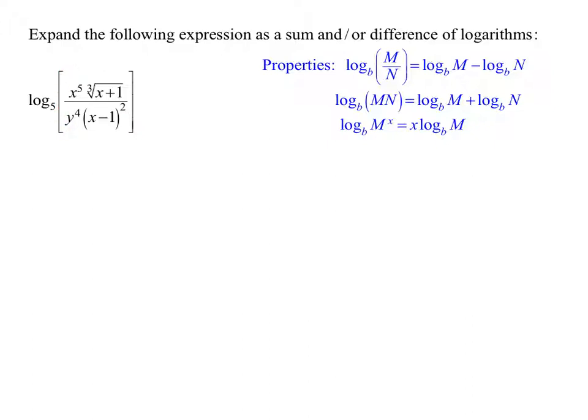The first thing I'm going to look at is I'm going to consider the quotient because I have x to the 5th times the cube root of x plus 1 in the numerator and y to the 4th times x minus 1 all squared in the denominator. So the first property of logs I'm going to use is log to the base b of the quotient m over n is the difference of two logs.